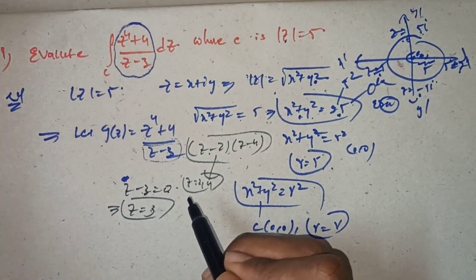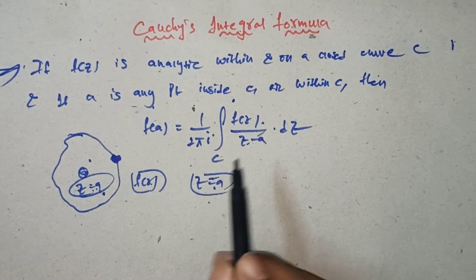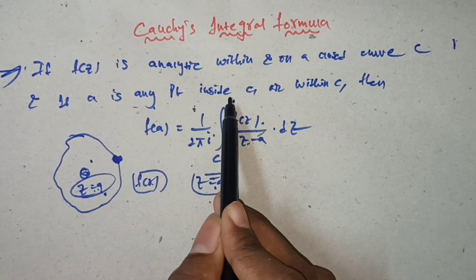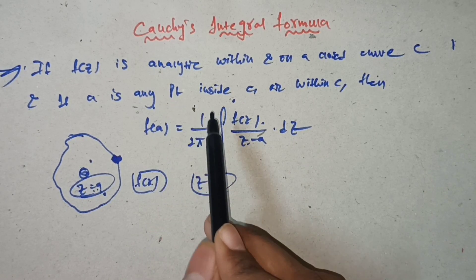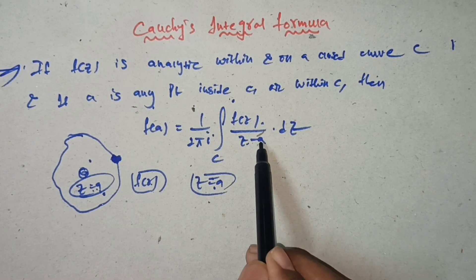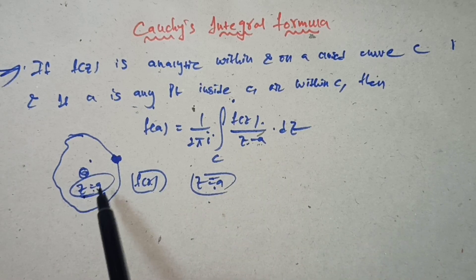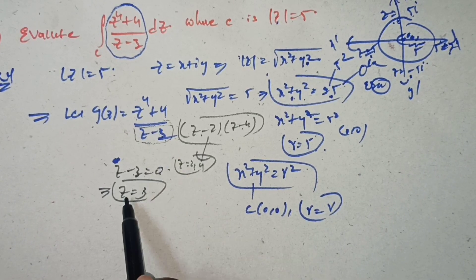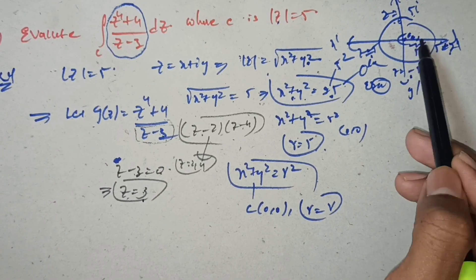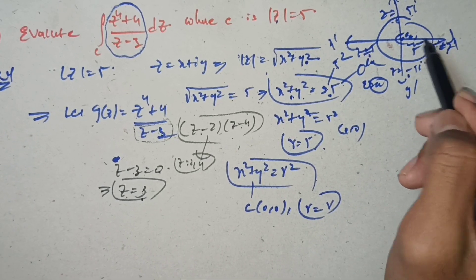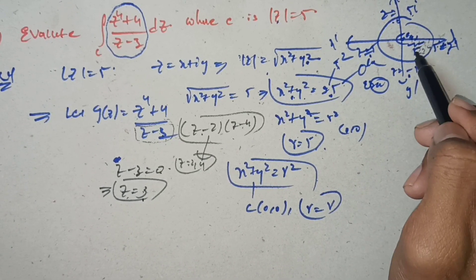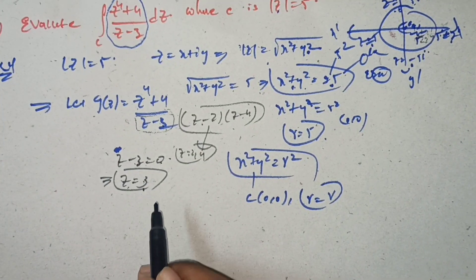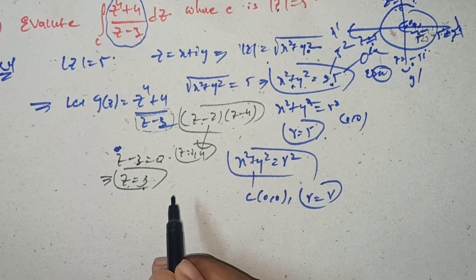Now, to apply Cauchy's Integral Formula, 'a' must be any point inside C. That is, the point must lie inside the curve. Now, z = 3: on the circle |z| = 5, the radius is 5, and 3 lies between 0 and 5, so z = 3 lies inside C.